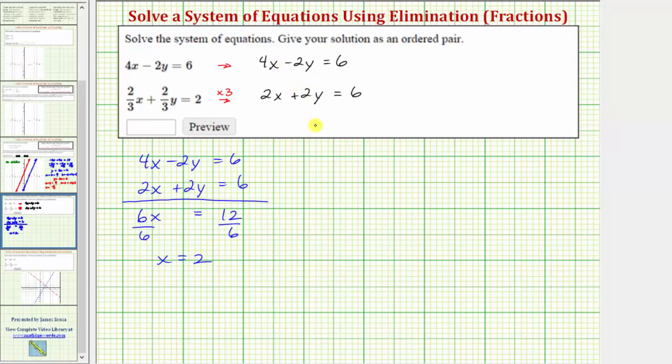So we know that our solution will be an ordered pair in the form of x comma y, and therefore we know that the x coordinate, or the first value of the ordered pair, is two.